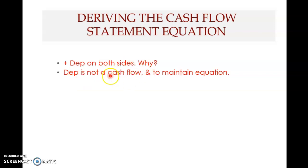Before this, the equation was just accounting income. To convert the accounting income to cash flow, we add depreciation. Remember that depreciation is not a cash outflow — it is an expense, an accounting expense, but it is not a cash flow. Therefore it underestimates the cash inflow, so we add depreciation in order to account for this. Therefore depreciation is added back into the equation.